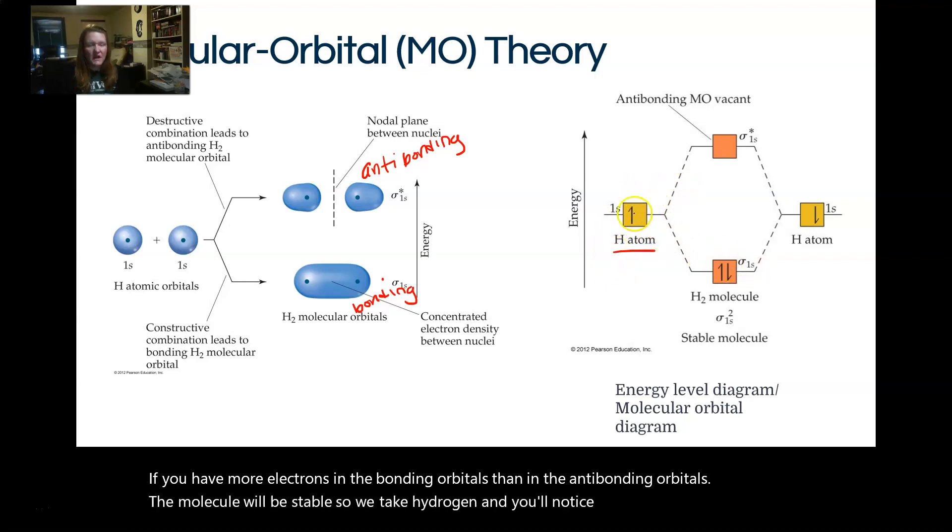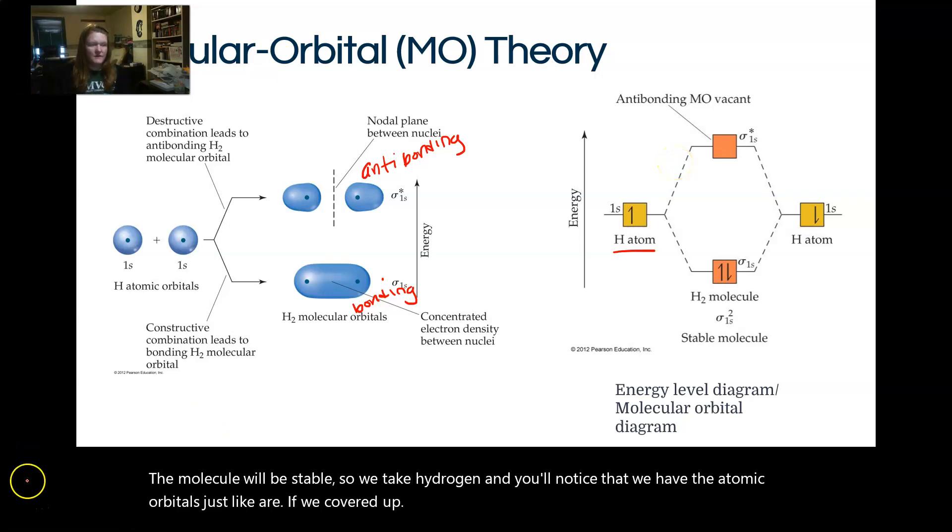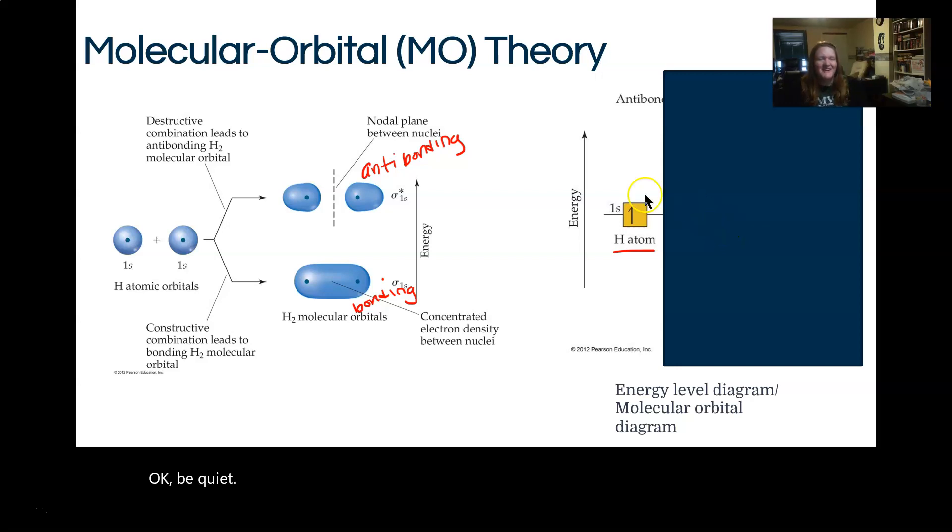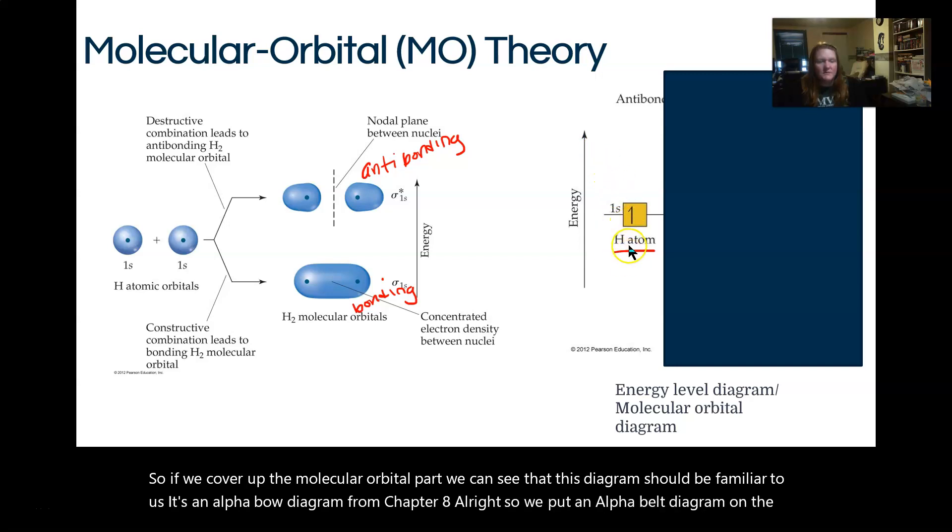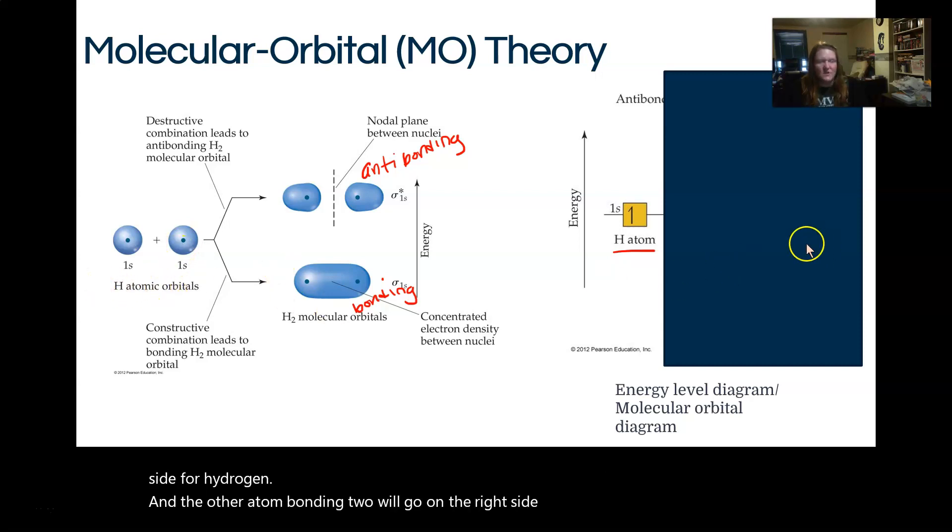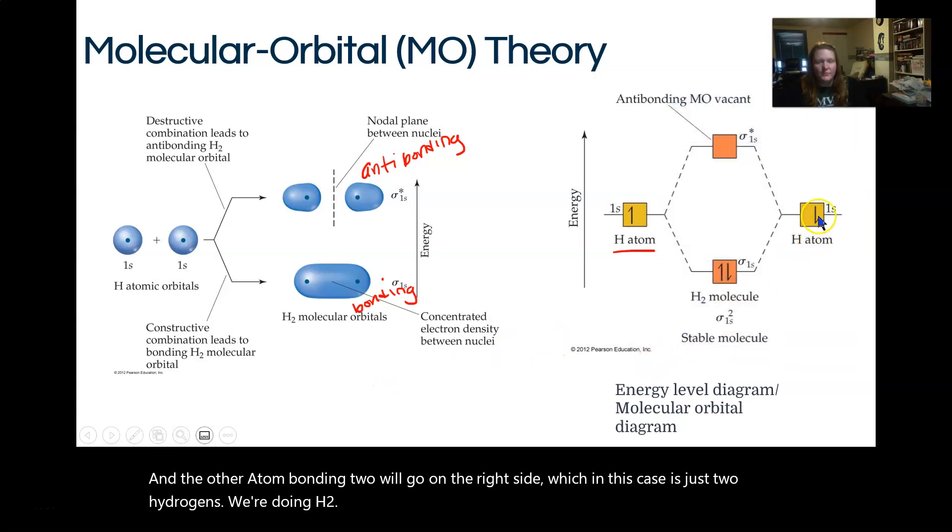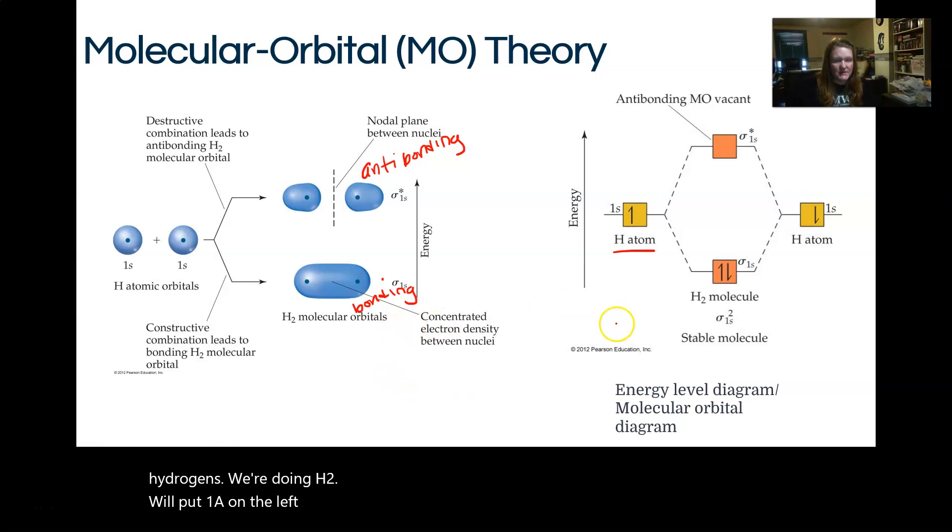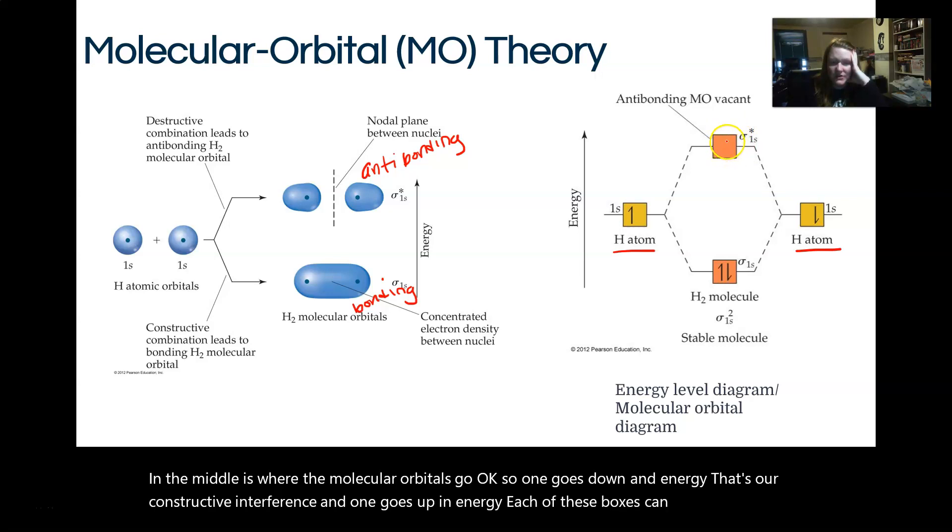And in short, if you have more electrons in the bonding orbitals than in the anti-bonding orbitals, the molecule will be stable. So we take hydrogen, and you'll notice that we have the atomic orbitals. If we cover up the molecular orbital part, we can see that this diagram should be familiar to us. It's an Aufbau diagram from Chapter 8. So we put an Aufbau diagram on the left side for hydrogen, and the other atom I'm bonding to will go on the right side, which in this case is just two hydrogens. We're doing H2. So we'll put one Aufbau on the left for H, which just has one electron in the 1s orbital, and then we have the second atomic orbital on the right side. In the middle is where the molecular orbitals go.